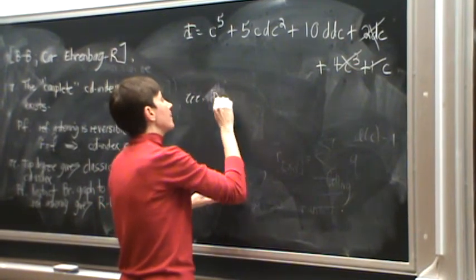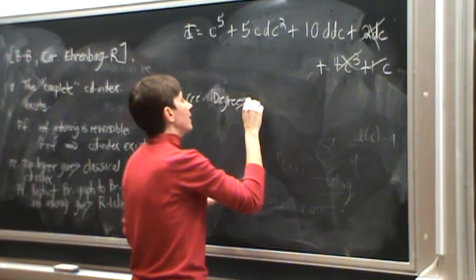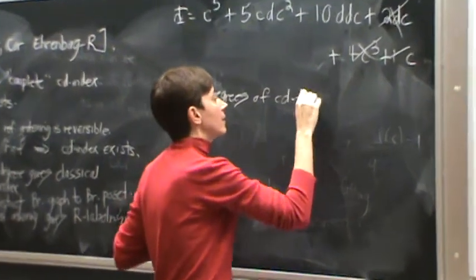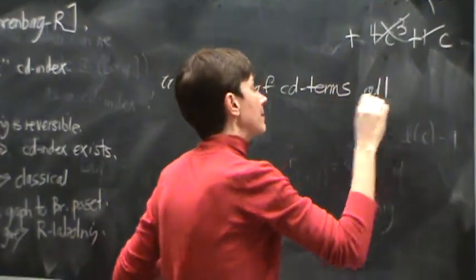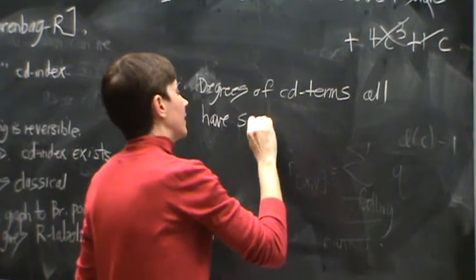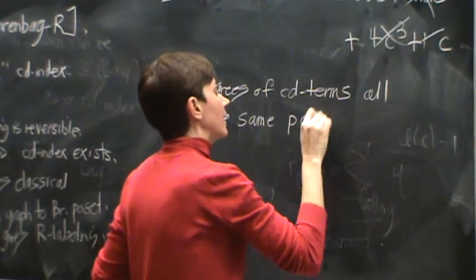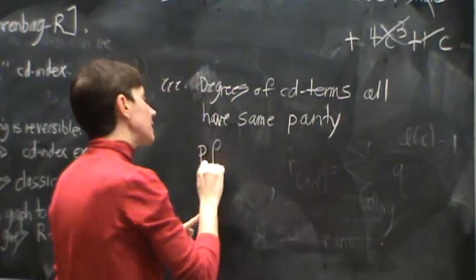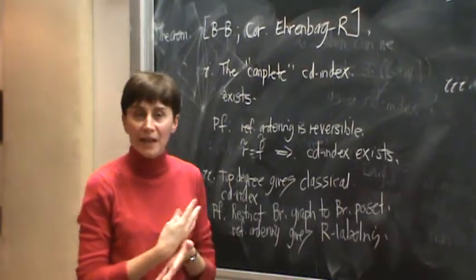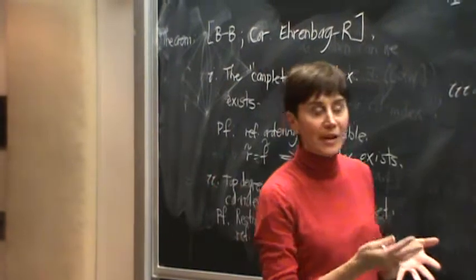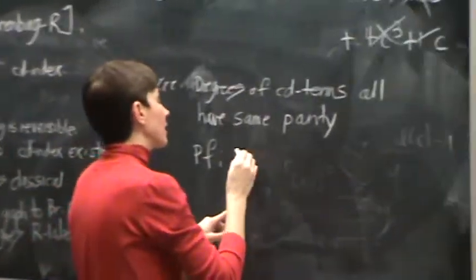So degrees of CD terms all have the same parity. And now the proof is like super easy, because all it is is actually from the fact that this underlying graph is bipartite. So that's where this is coming from.